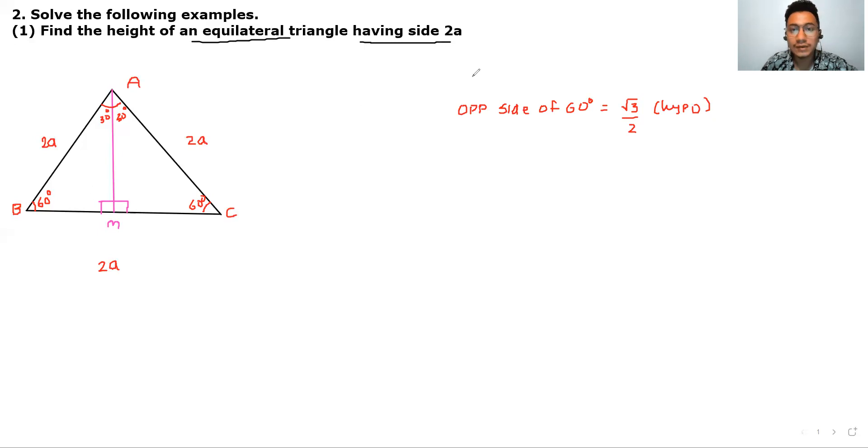Opposite side of 60 in triangle AMB, in triangle AMB you can apply. AM is equal to root 3 upon 2 multiply with hypotenuse. So AM's value is root 3 upon 2 multiply with 2A, and 2 and 2 cancel. So your answer is root 3A, your answer is root 3A.